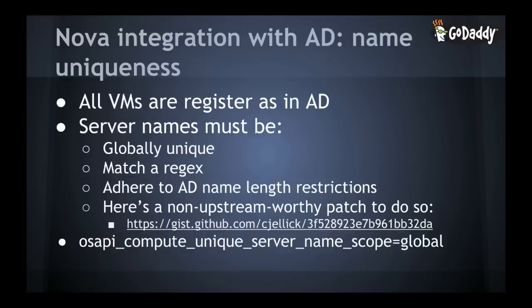Moving on to Nova integration with Active Directory. All servers at GoDaddy have to register into AD because other systems feed off that information. Because of that, we have some additional constraints we have to impose on server names. Specifically, they need to be globally unique across the entire Active Directory tree because the server name is used as the CN and the SAM account name. They need to match a regex — so there's special character enforcement — and they need to adhere to the name length restriction we have in our Active Directory installation.